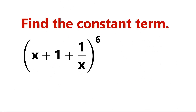Find the constant term after the expression x plus 1 plus 1 over x, all to the power of 6, is fully expanded term by term and like terms are collected together.